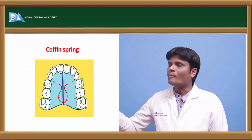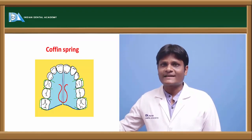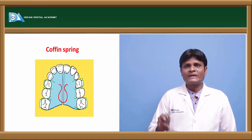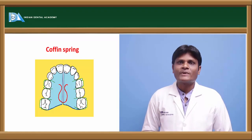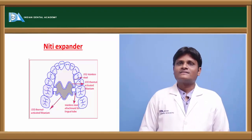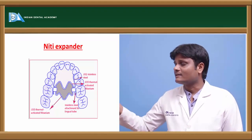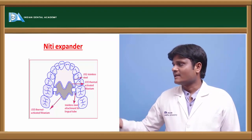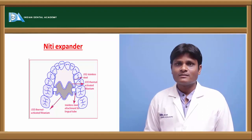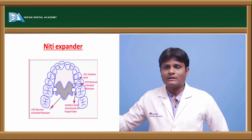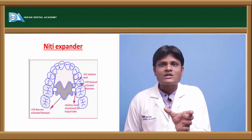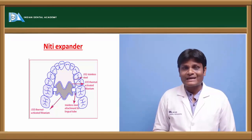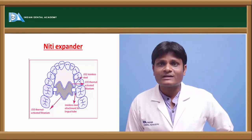The coffin spring is an omega-shaped spring embedded in a split acrylic plate, replacing the jack screw for expansion. A split acrylic plate with a jack screw can also be used. The nitide expander is a nickel-titanium made expander that is compressed and inserted into the stainless steel lingual tubes attached to molar bands. As it tries to return to its original form, it exerts an outward thrust on the dental arches, increasing the arch perimeter and thereby gaining space.